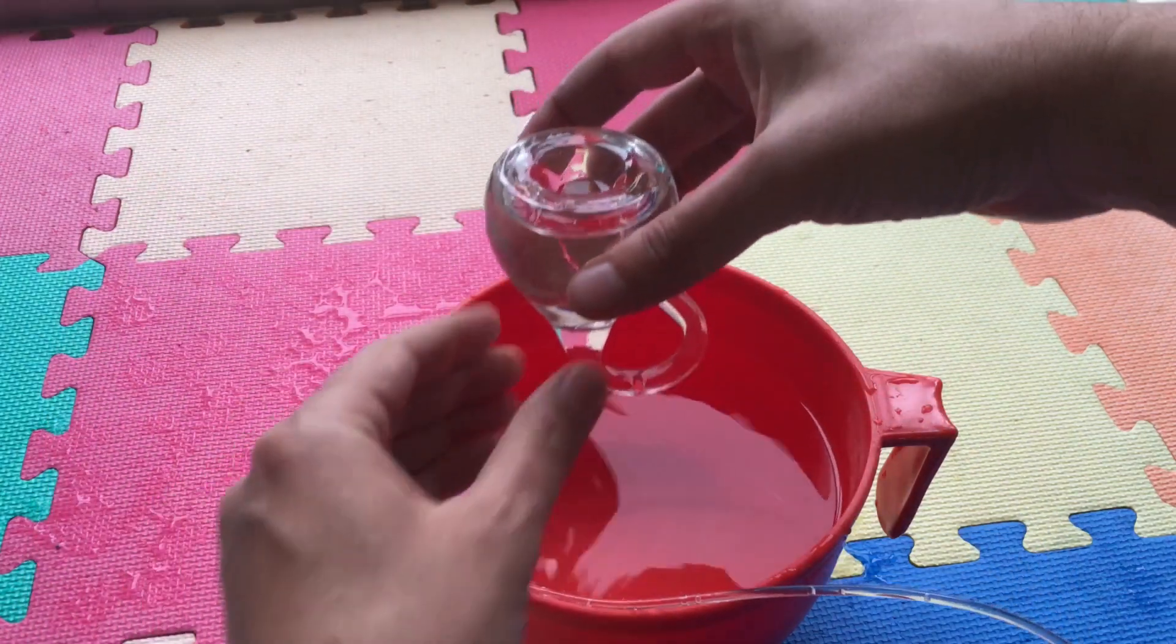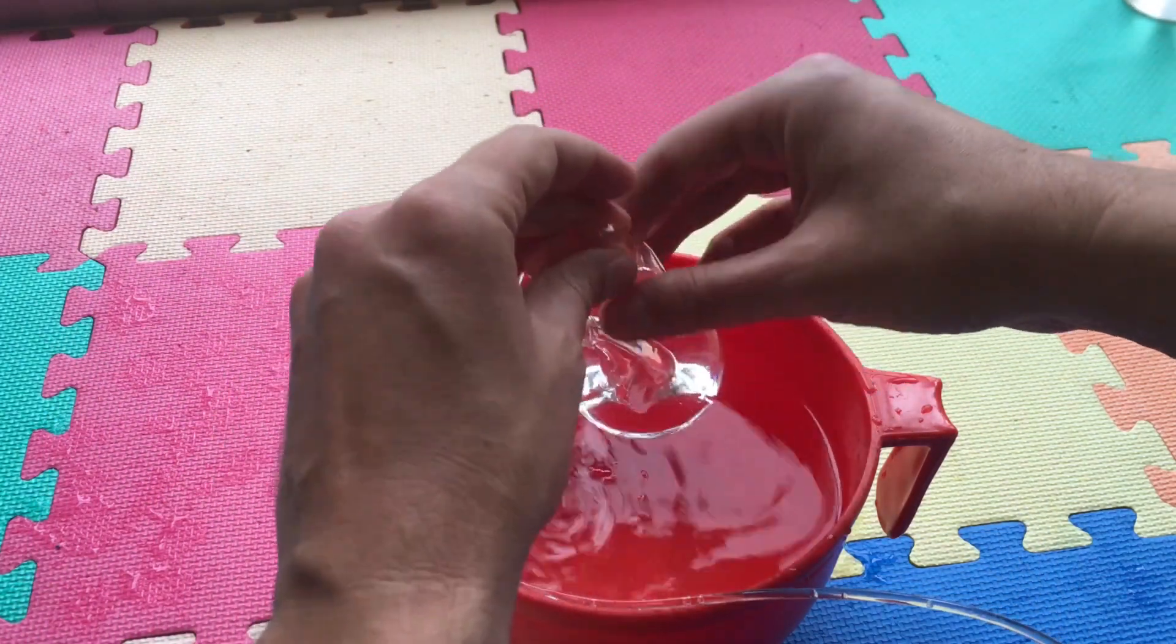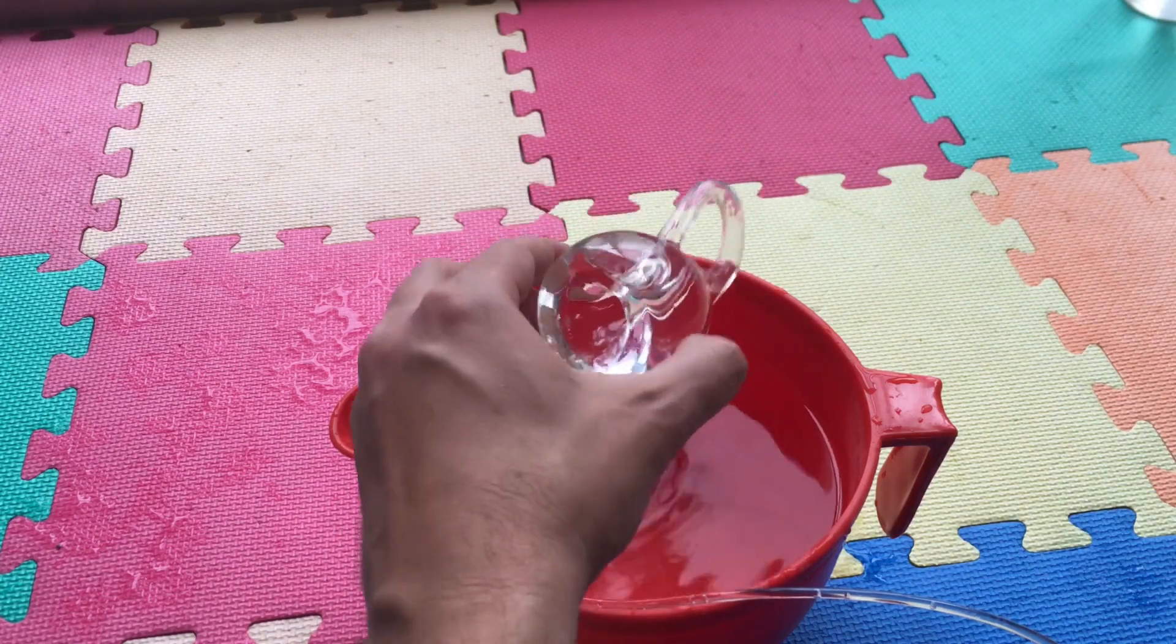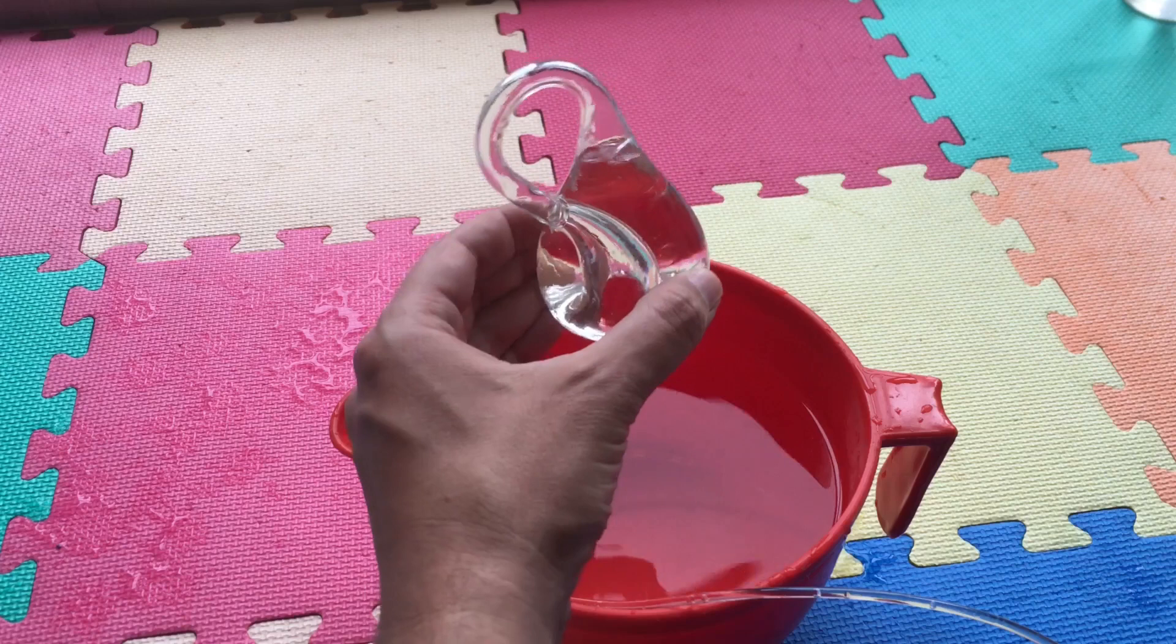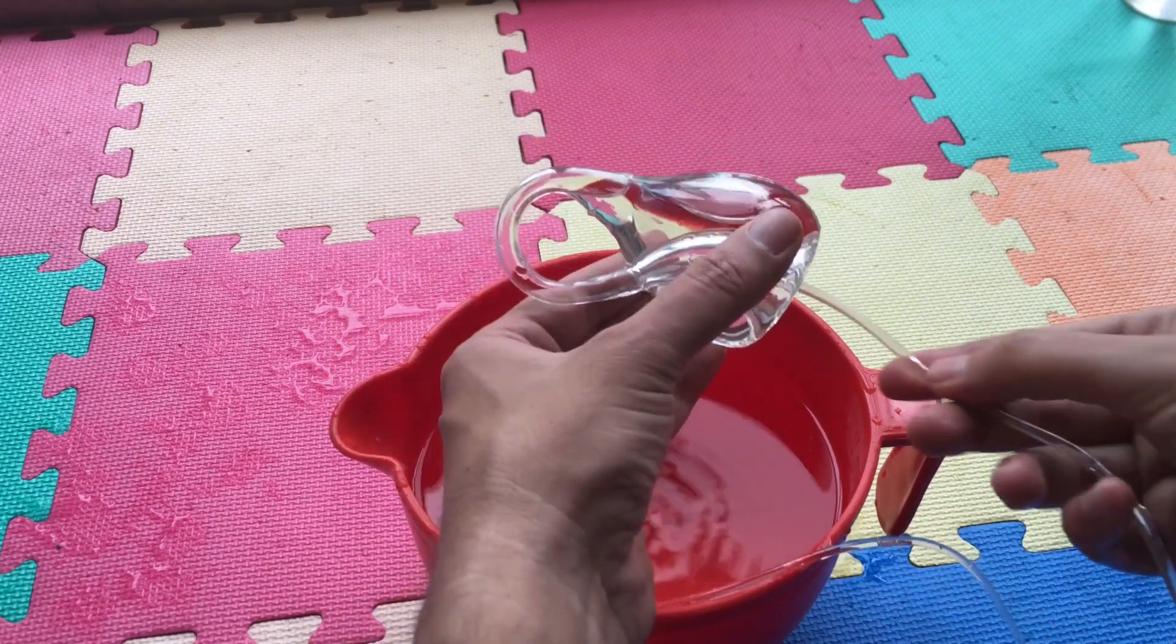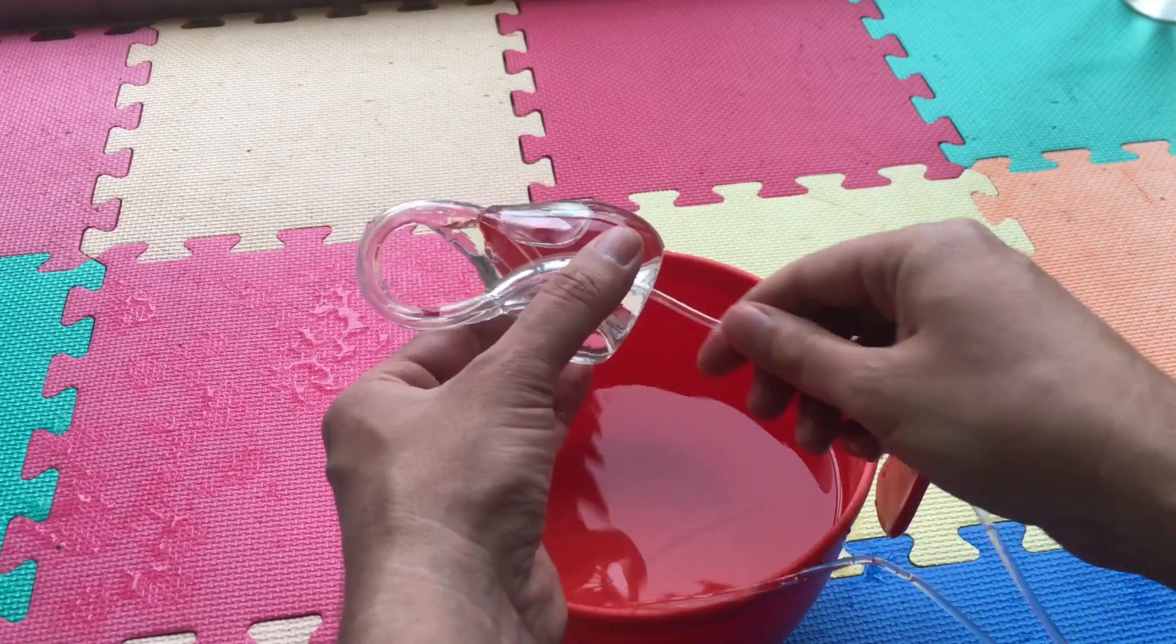This is the easiest way to fill up a Klein bottle with water. Our Klein bottle is filled with water even though it doesn't have volume. Strictly speaking, mathematically it doesn't have volume, but due to gravity we can trap the water inside.